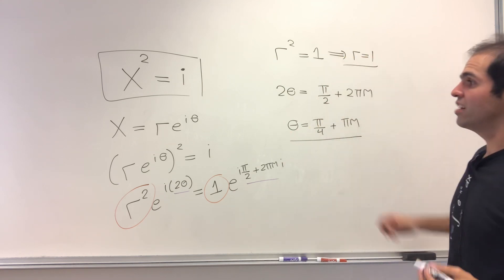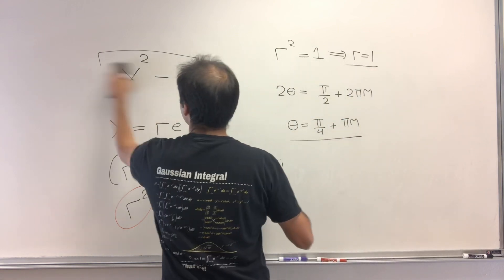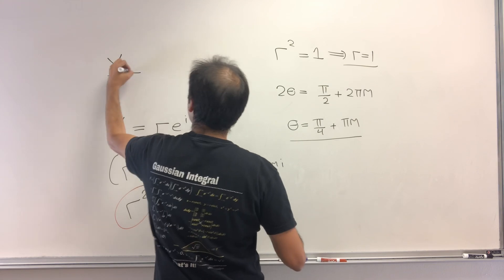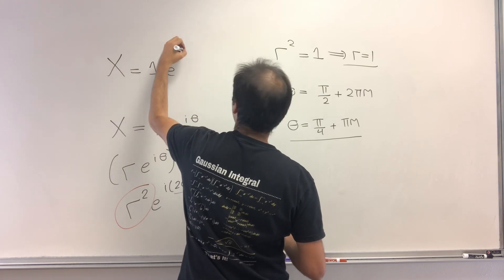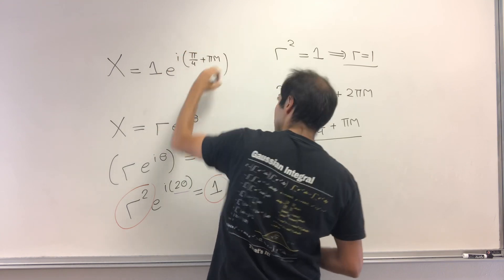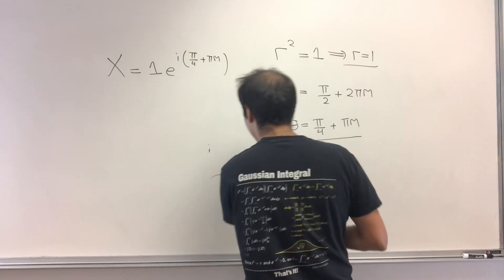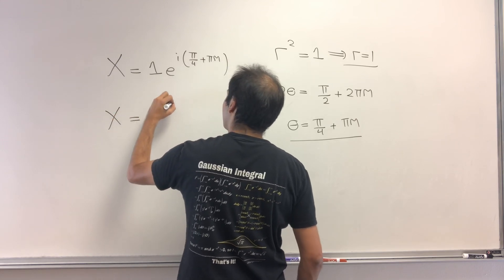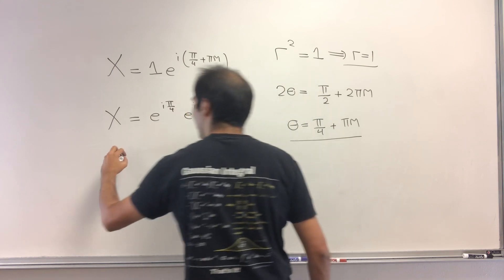Okay, which tells you exactly what this x looks like, because then x is just e^(i(π/4 + πm)). And that gives you basically the following: x is e^(iπ/4) times e^(iπm). And if you want, you can calculate this.